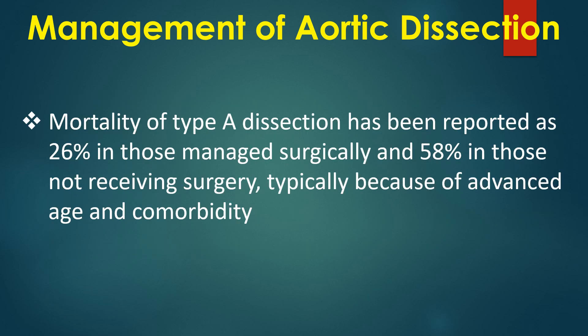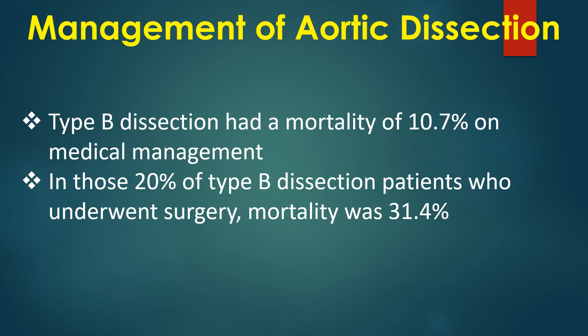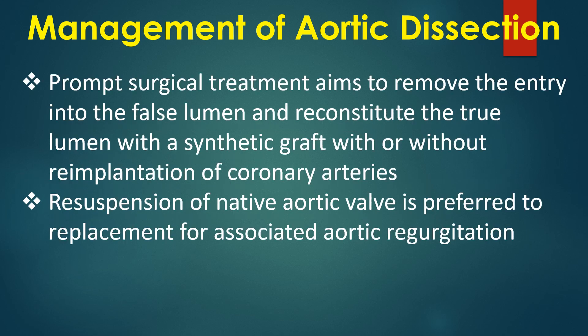Mortality of type A dissection has been reported as 26% in those managed surgically and 58% in those not receiving surgery, typically due to advanced age or comorbidity. Type B dissection had mortality of 10.7% on medical management, while in the 20% who underwent surgery, mortality was 31.4%. Prompt surgical treatment aims to remove the entry into the false lumen and reconstitute the true lumen with a synthetic graft, with or without re-implantation of coronary arteries. Resuspension of the native aortic valve is preferred to replacement for associated aortic regurgitation.